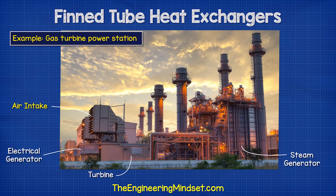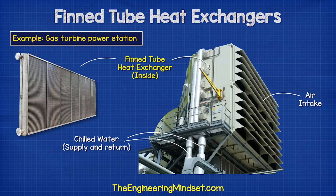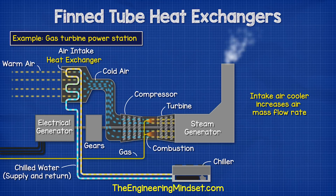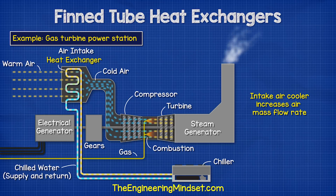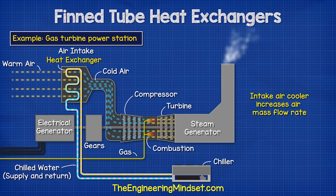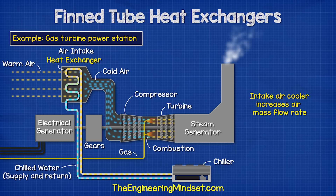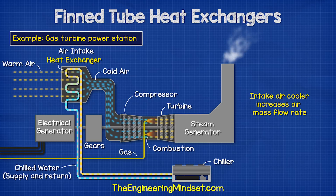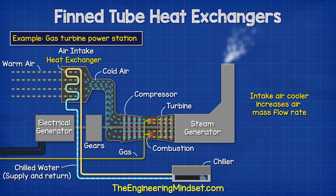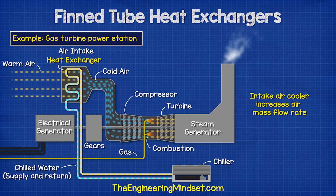For example, these are used on a gas turbine power station to cool the intake air which will be sucked into the turbine and combusted. This helps the turbine run at optimal performance in hot and humid conditions. A chiller pumps cold water to the heat exchanger, which then flows through the tubes.